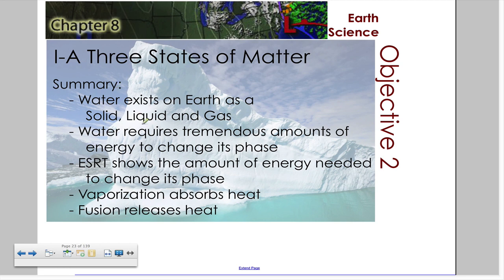What you need to know: water exists on Earth in all three phases. Water requires tremendous amounts of energy to change its phase. The reference table shows you the amount of energy needed. Vaporization absorbs heat; fusion and condensation release heat. This has been the review of Section 1A in Chapter 8.